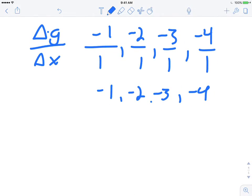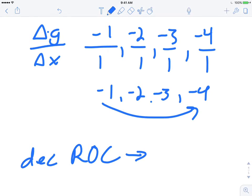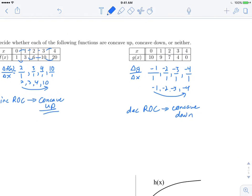Okay, those numbers are getting more negative, which means they're decreasing. So decreasing rate of change gives us concave down. And if you graphed those points out, you'd also see the same thing.